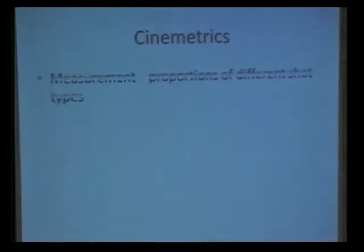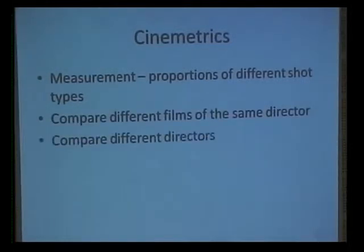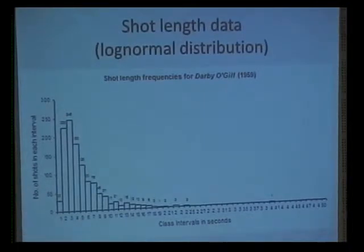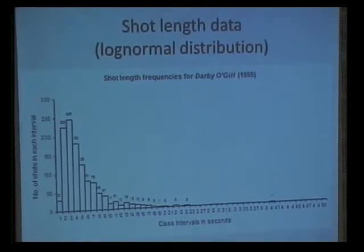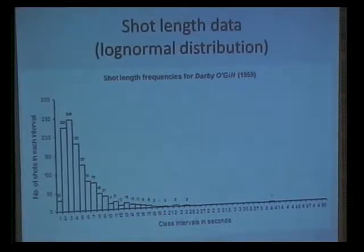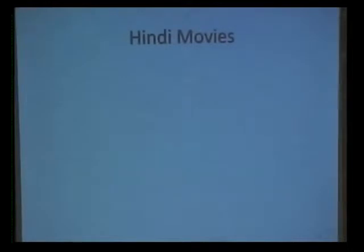The measurements are proportions of different shot types, and you can compare different films of the same director or compare different directors. The short-length data follows a beautiful log-normal distribution — I showed a graph borrowed from that website where the class intervals are in seconds. It is real-life data producing a beautiful log-normal distribution. Enough about stuff I don't understand — let us talk about something I do understand.